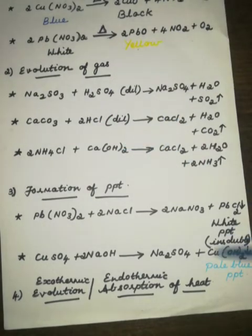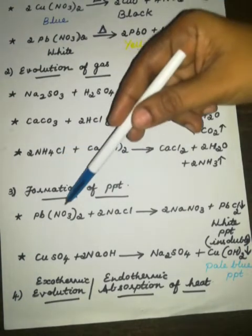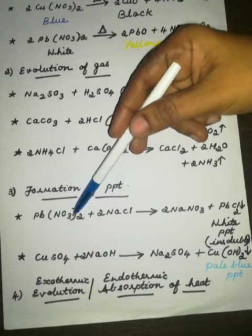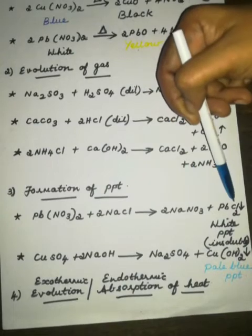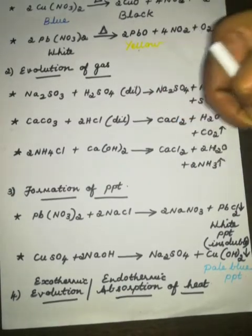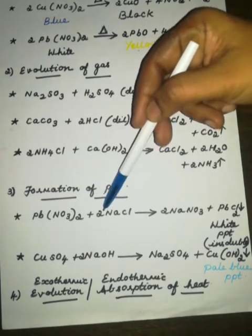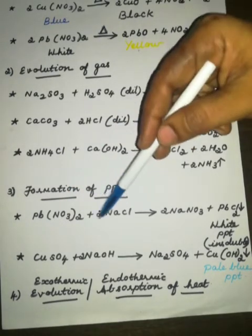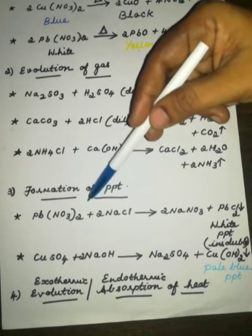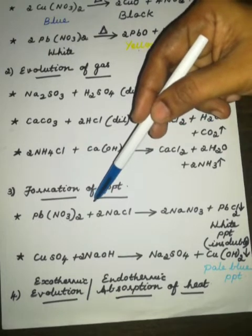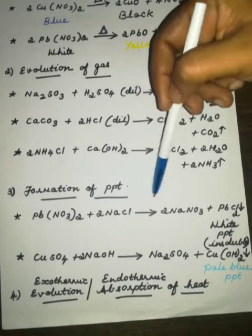Now, the third external indication of chemical reaction is formation of PPT. See, when you take a lead nitrate salt along with sodium chloride, what happens? Sodium nitrate plus lead chloride is formed. Actually, these 2 salts are in solid condition. So what we are going to do is make it as an aqueous solution. Aqueous solution means, when you mix both the solid substances, it doesn't react. So make it as an aqueous solution and make that chemicals react.